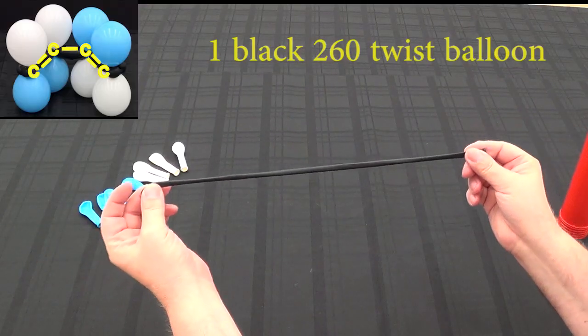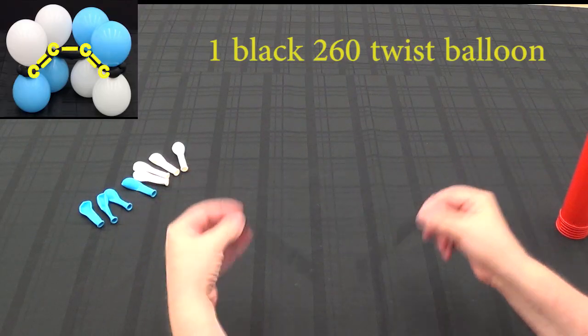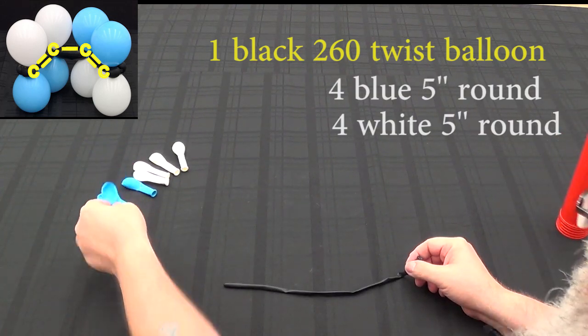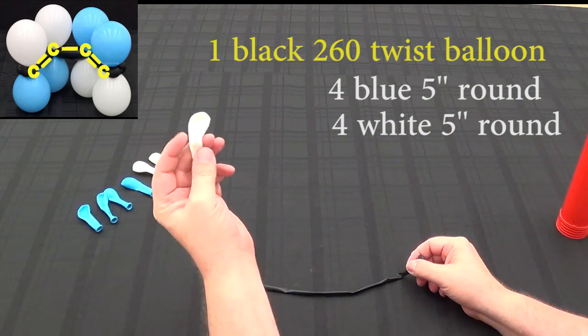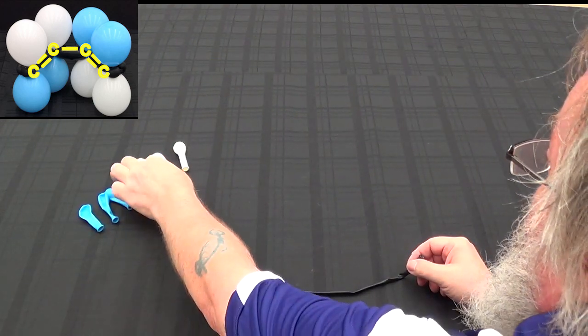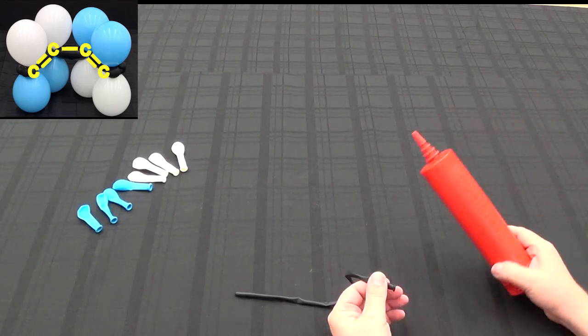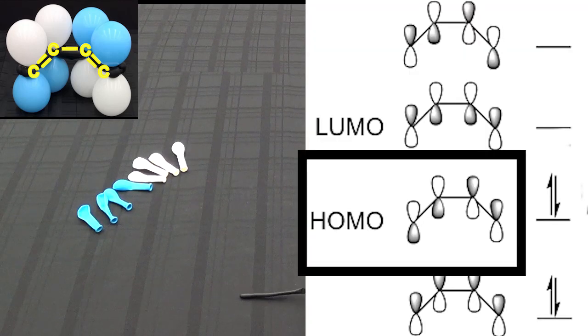For that we're going to need one black 260 balloon for the different orbitals. We're going to use four blue 5-inch balloons as well as four white 5-inch balloons. They represent the orbitals in the pi system as we look at the interaction of the orbitals in the highest occupied molecular orbital.